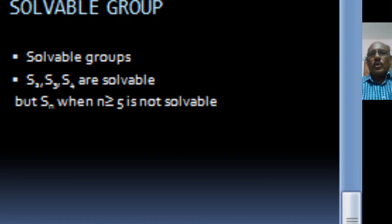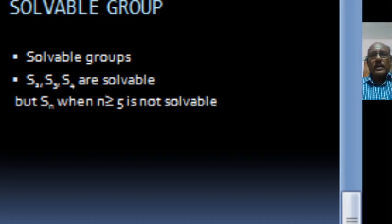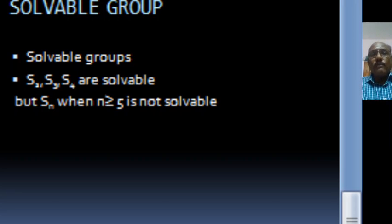So there is no radical formula for finding the roots of a polynomial of degree n greater than or equal to 5. I am saying that there is no formula — I am not saying that it is not possible to find the roots of the polynomial. By the fundamental theorem of algebra, an nth degree polynomial has exactly n roots. So it is possible to find the roots of that polynomial, but there is no radical formula for finding them.